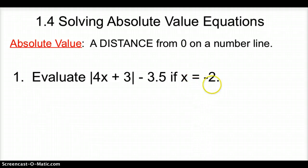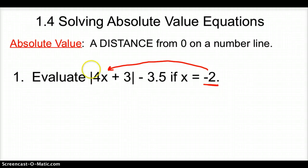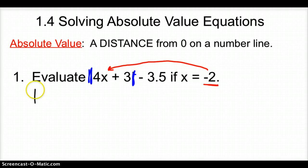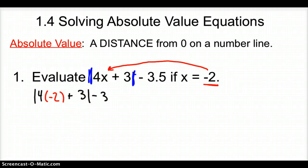First thing we do is plug negative 2 in for x. Now, those bars are absolute values — not 1's. So plugging in: we have the absolute value of 4 times negative 2 plus 3, all inside the absolute value, minus 3.5.